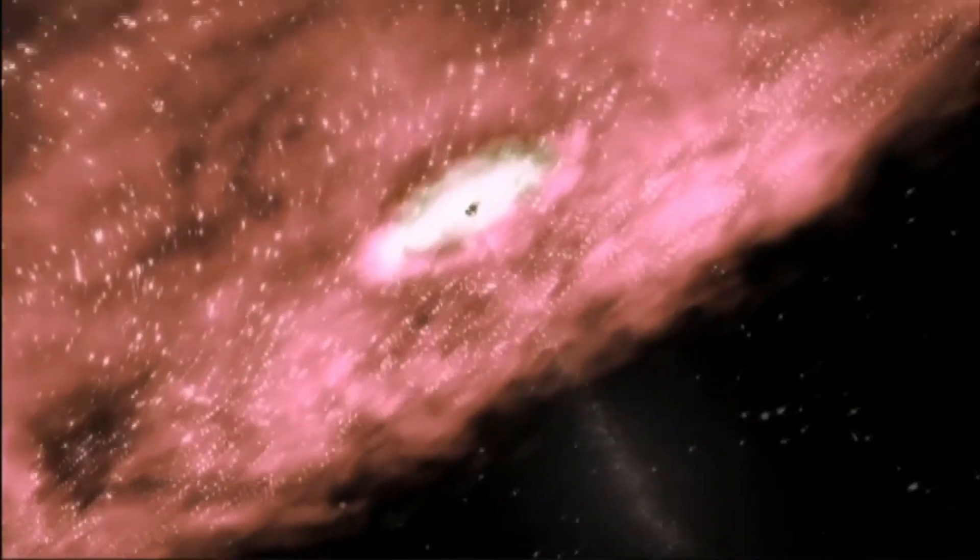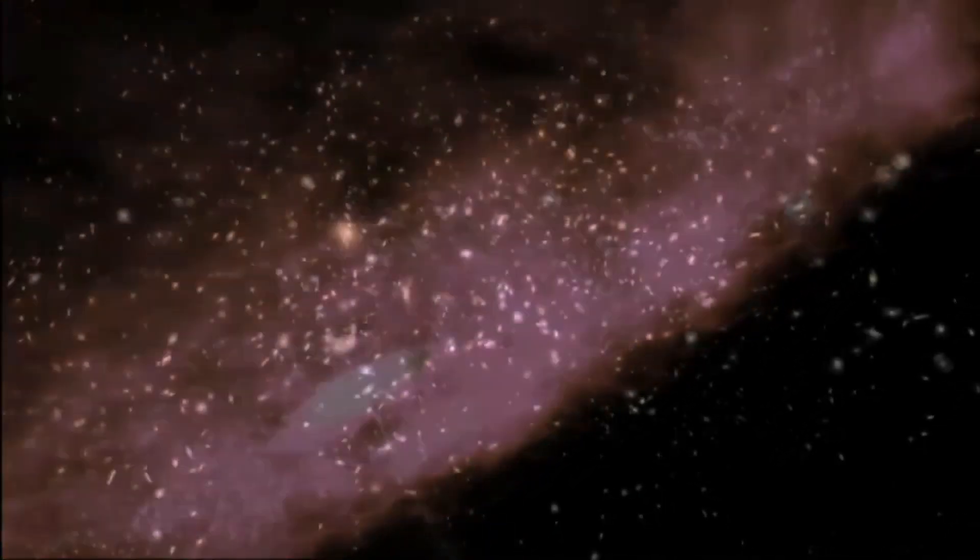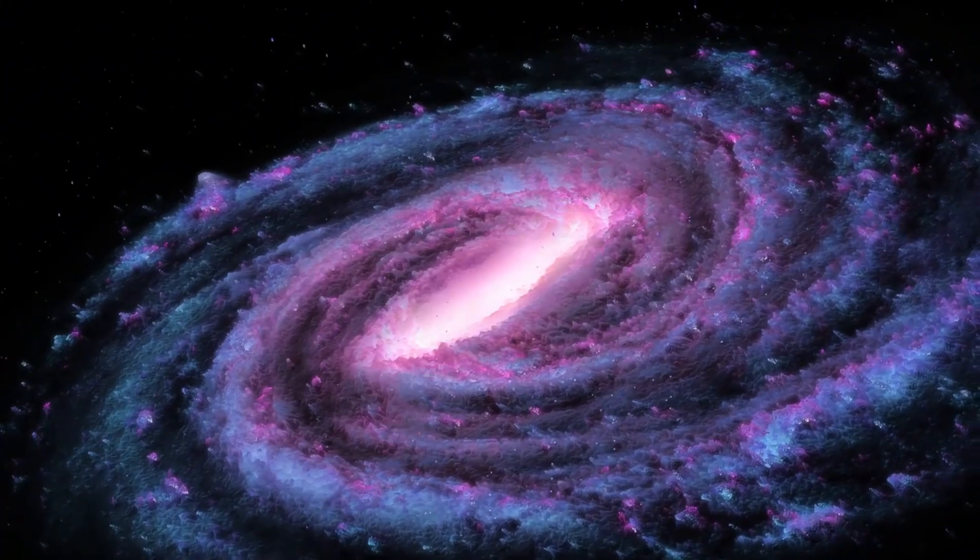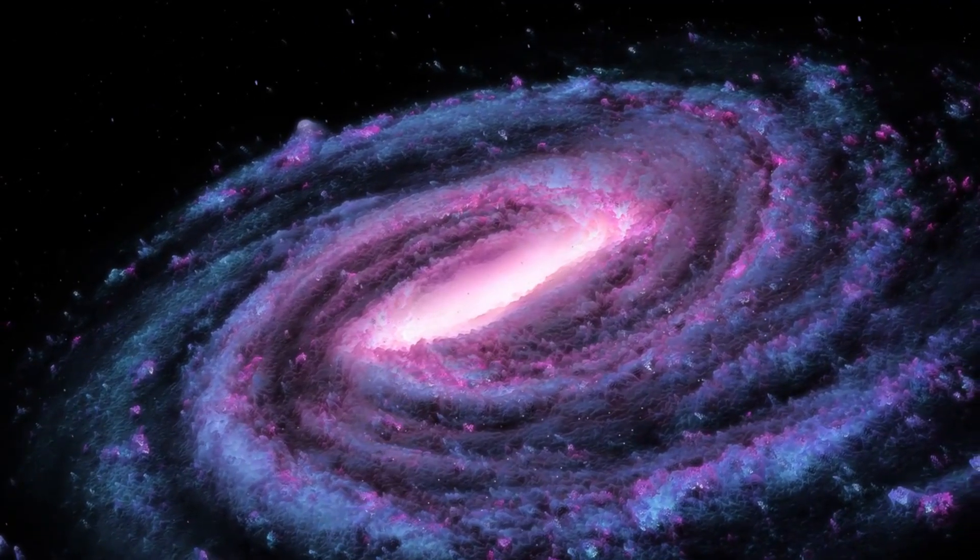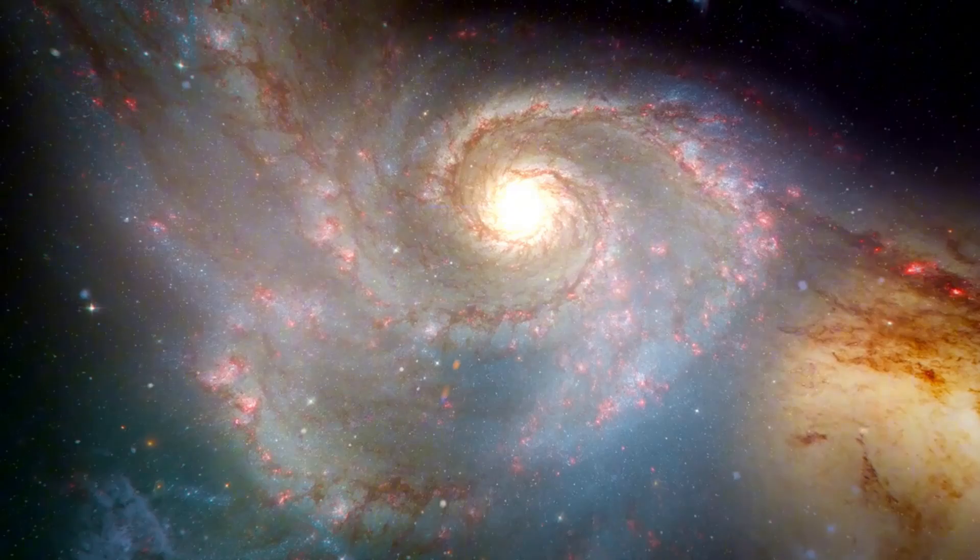Astronomers estimate that light from these galaxies has traveled more than 13.5 billion years to reach Earth, offering us a glimpse into the universe's distant past. These galaxies were discovered when the universe was in its infancy, providing crucial insights into the rapid formation of the first generations of galaxies.